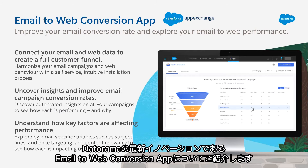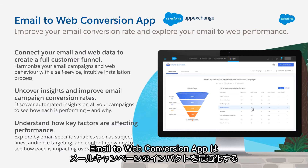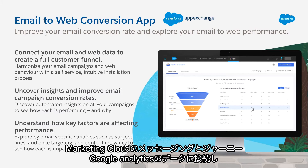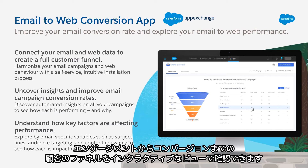Hello everyone, today we'll be going over the new Email-to-Web Conversion app, the latest innovation from the Datarama team. The Email-to-Web Conversion app is a package solution built to help marketers optimize the impact of their email campaigns. With the Email-to-Web Conversion app, you can connect your Marketing Cloud Messaging and Journeys or Pardot to Google Analytics to create an interactive view of the customer funnel, from engagement to conversion.